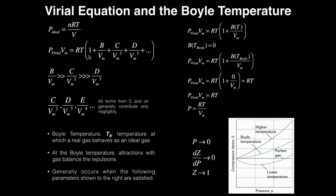One important thing to notice about the virial equation is we have this power series term in parentheses: one plus B — a number — over the molar volume, plus C over the molar volume squared, plus D over the molar volume cubed, and this pattern is going to repeat out to infinity.